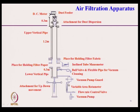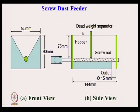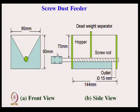A variable area rotometer measures the flow rate of air. Screw-type dust feeders are used normally; a stepper motor is connected with a screw rod, and as the motor rotates at known constant speed, the screw system moves dust from the hopper horizontally. At the exit point the dust is fed into the vertical pipe, and the dust feed rate can be changed by changing the speed of the motor.